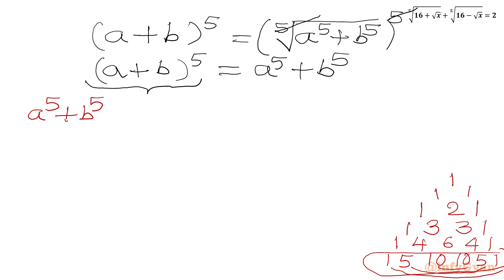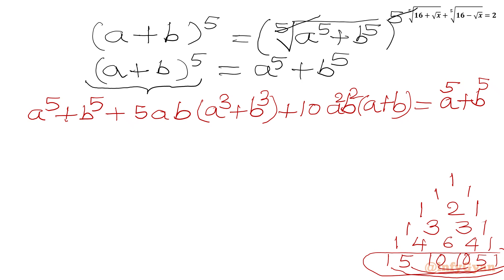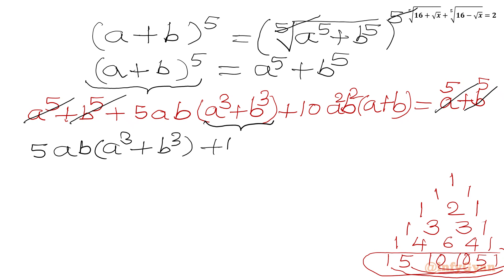The a⁵ plus b⁵ terms cancel from both sides. Now I will apply the a³ plus b³ formula. So we get: 5ab(a³ plus b³) plus 10a²b²(a plus b) equals 0.